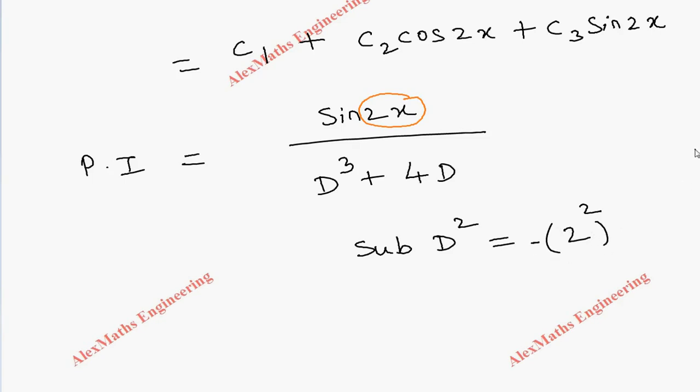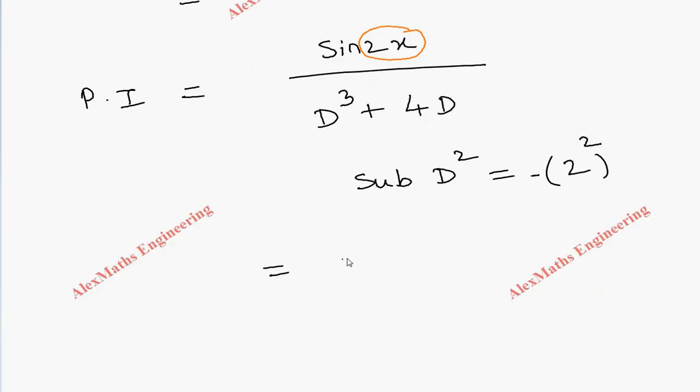So numerator will be sin(2x), but we don't have a D² term, so we have to rewrite this as sin(2x) by D³ can be written as D into D², or D² into D, plus 4D. So it is possible to substitute only in this D² as per the procedure.